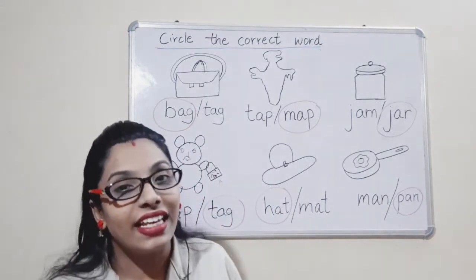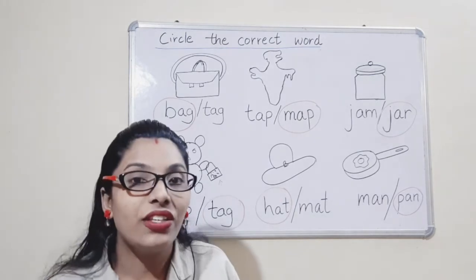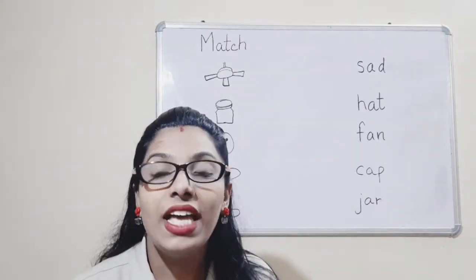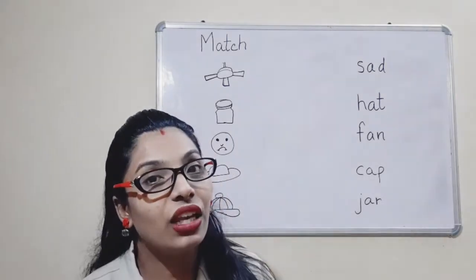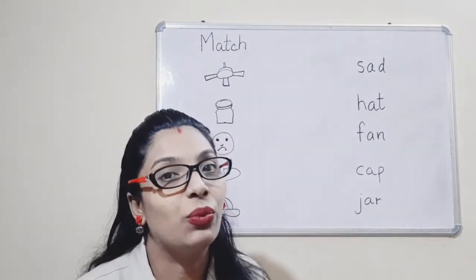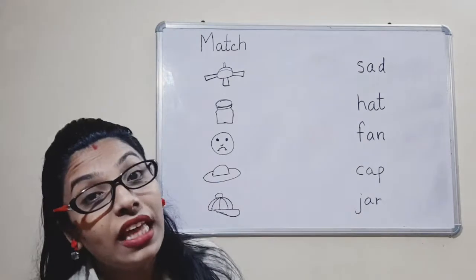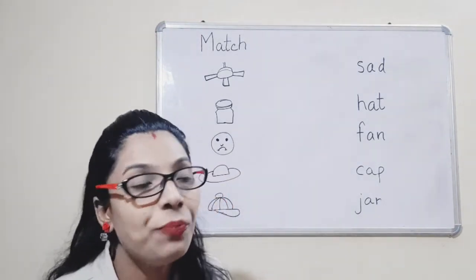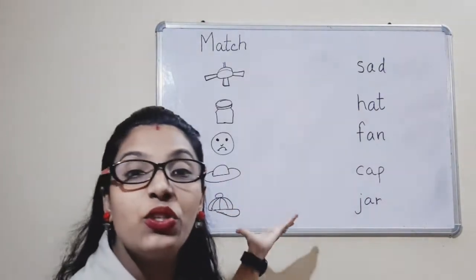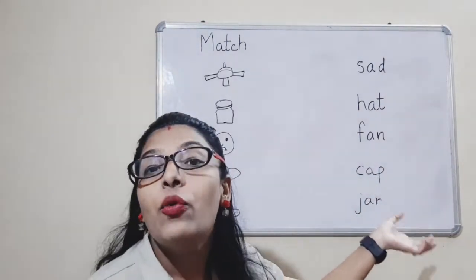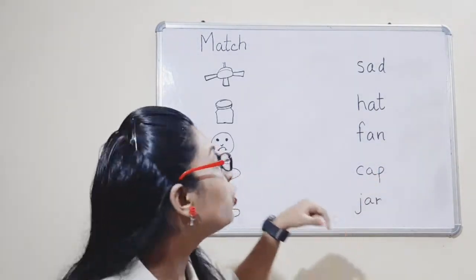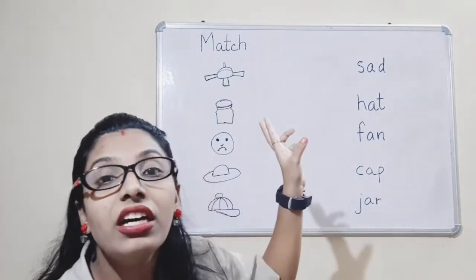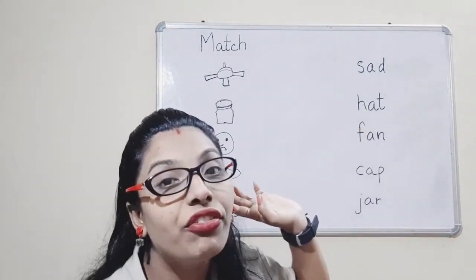Now we will do the second exercise. Children, come. Now we will do the second question. You are familiar with that — we did it with letters, now we are going to match with words. This side we can see the picture, and this side we can see the words related to them. So you have to match the particular picture with the spelling of the picture.